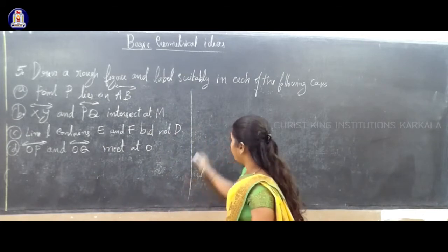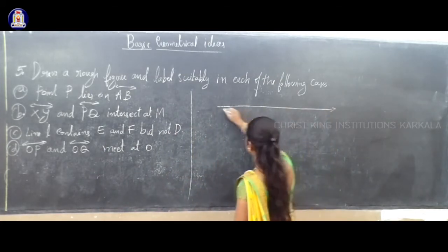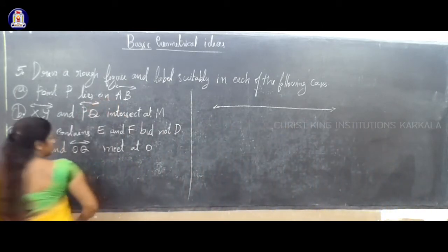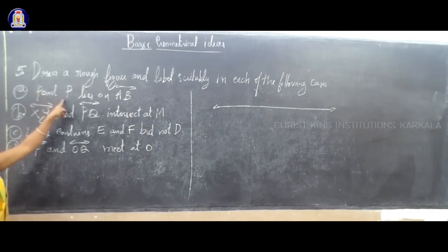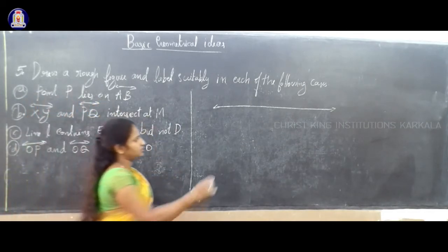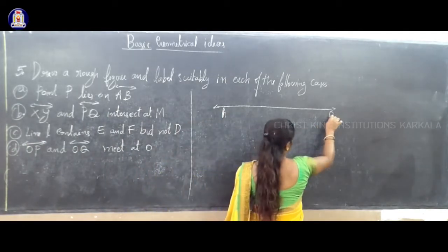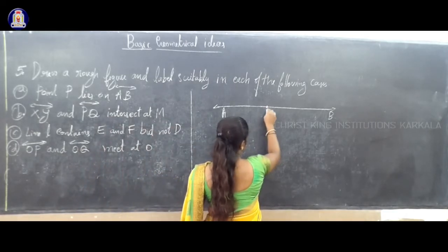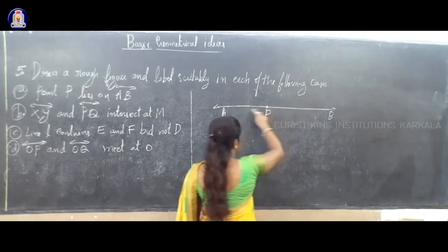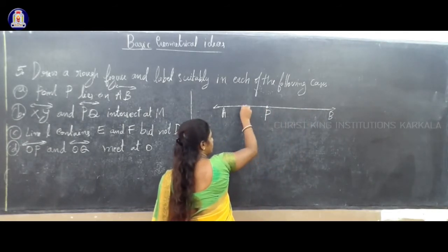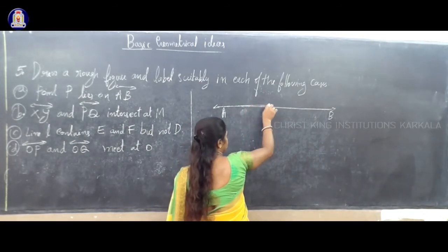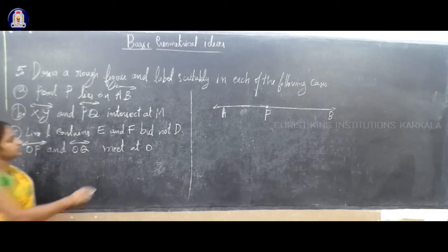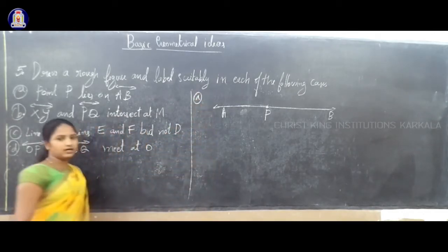We have to draw a line — a rough diagram — straight to the right. We have to represent point P on line AB. Consider A on one end and B on the other. AB is a line, so you can consider point P on this line anywhere. I consider point P on line AB.